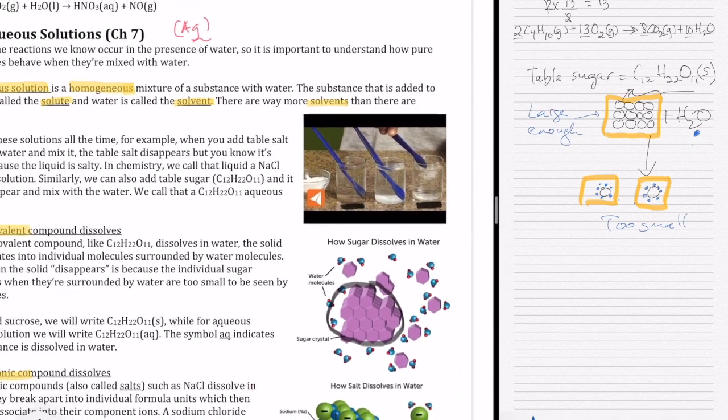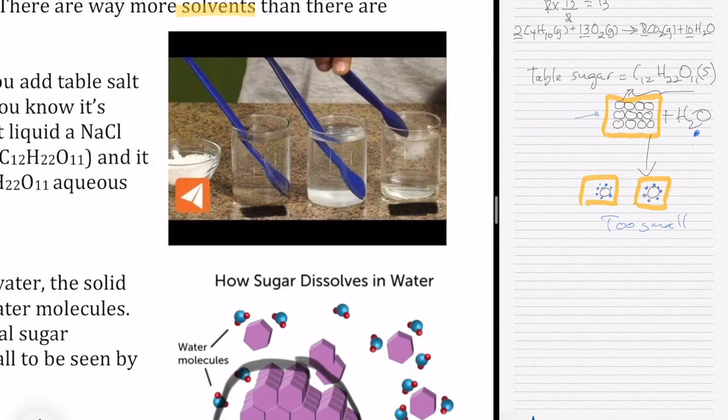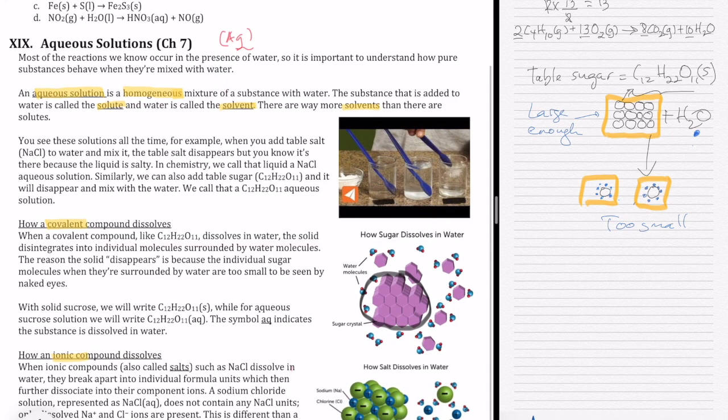So just like in this case right here, right, I have water, I'm adding some sugar to it. Now all of a sudden it looks all clear. The reason is because all these sugar particles that were originally stuck together is now broken apart into individual particles surrounded by water. And they are too small for us to see by eye. So they just look like a clear solution. Whereas when they're in this form, they're large enough for us to be able to observe.